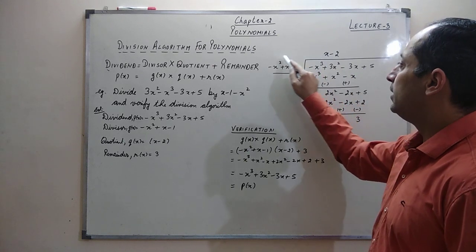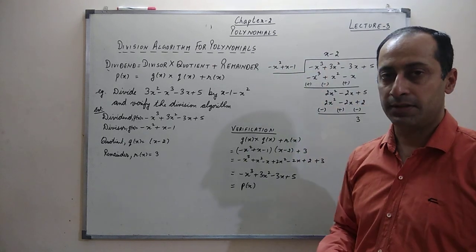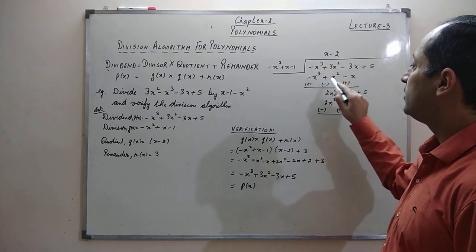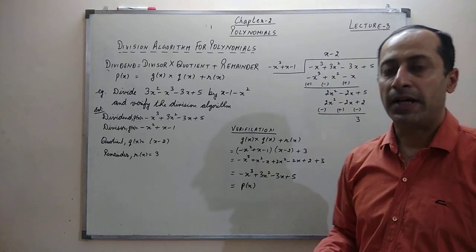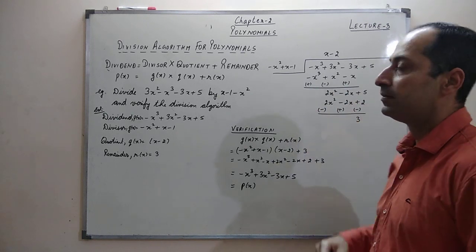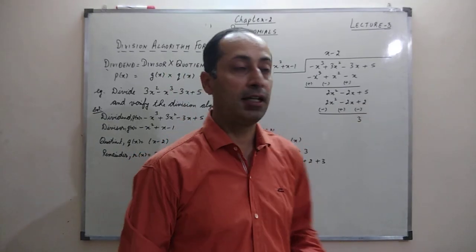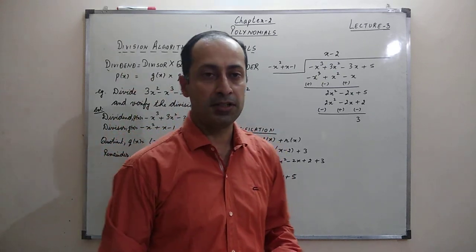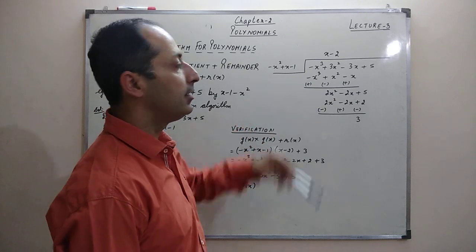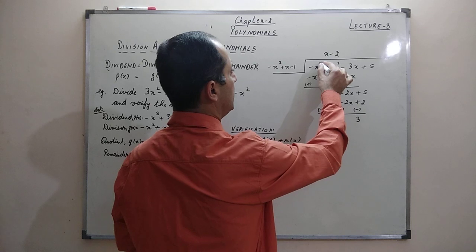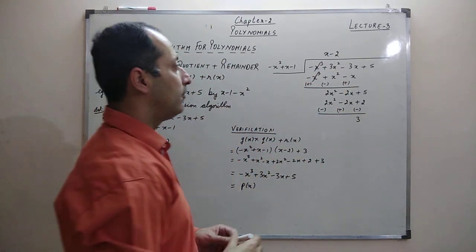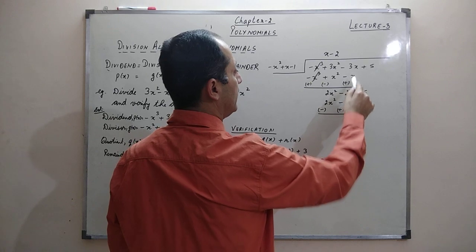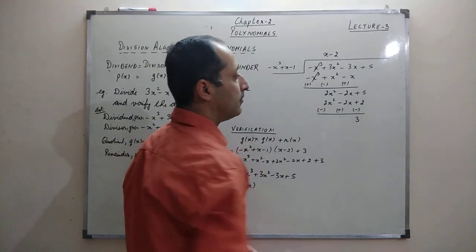I multiply the complete divisor by x. So -x² × x = -x³, x × x = +x², and x × (-1) = -x. I change the signs because division is repeated subtraction. After changing signs and subtracting, the -x³ terms cancel. I get 3x² - x² = 2x², then -3x + x = -2x, and bring down the next term +5.